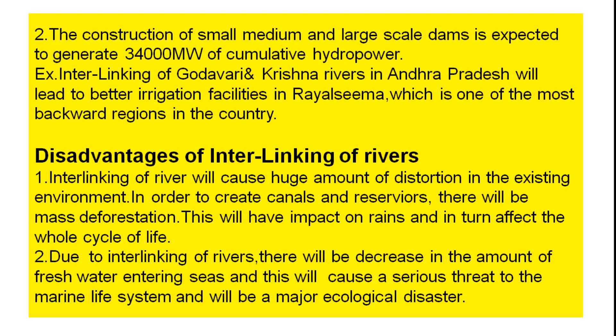3. The interlinking of Godavari and Krishna river in Andhra Pradesh will lead to better irrigation facilities in Rayalaseema, which is one of the most drought-affected areas in the country.